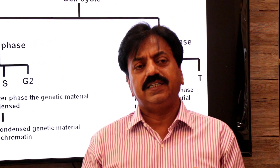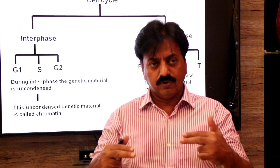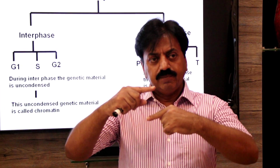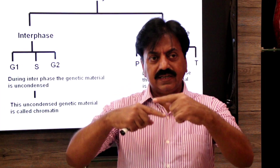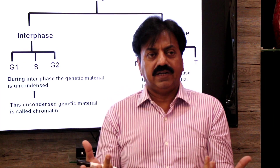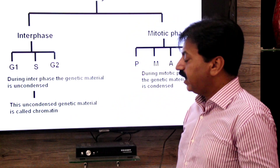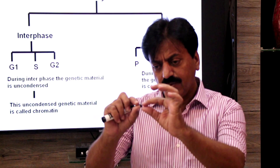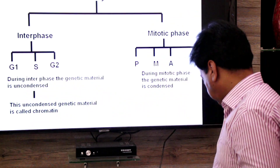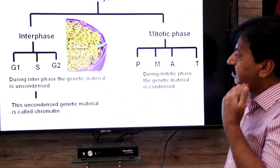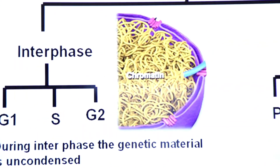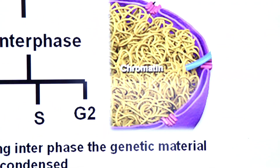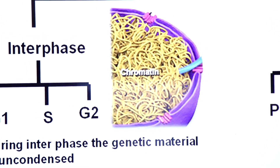Chromatin has two parts: DNA and histone protein. We call this combination chromatin. The DNA coils around histone proteins to form a condensed structure, but in interphase it is still uncondensed — coiling has not started and the DNA remains open.